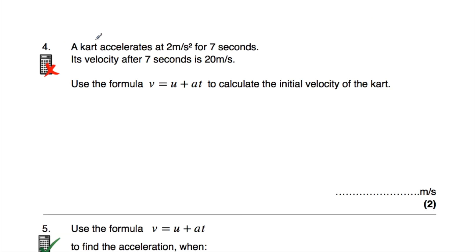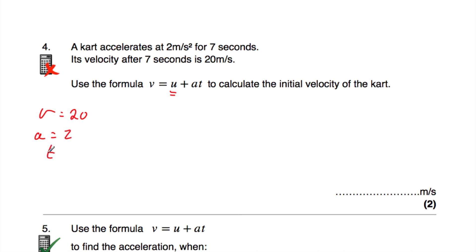Question number four: a cart accelerates at 2 metres per second squared for 7 seconds. Its velocity after 7 seconds — the final velocity, v — is equal to 20 metres per second. We've been asked to use v equals u plus at to find the initial velocity of the cart. So we want to find u. We've got v is 20, a is 2 metres per second squared, and t is 7 seconds.